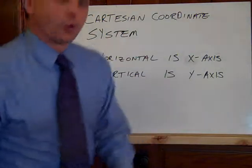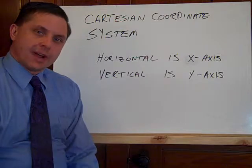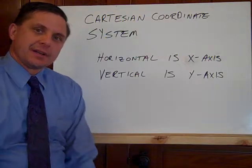Alright, we're going to do a review of the Cartesian coordinate system, and actually that's graphing points and lines that can happen on a system.